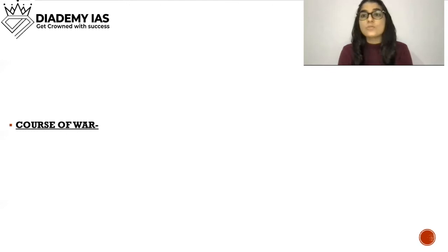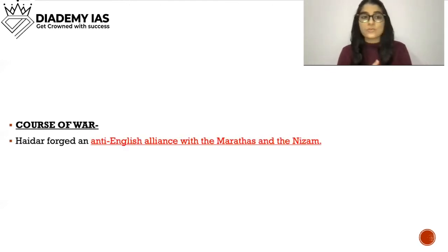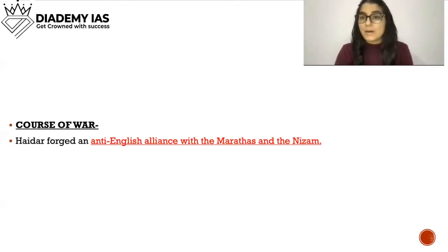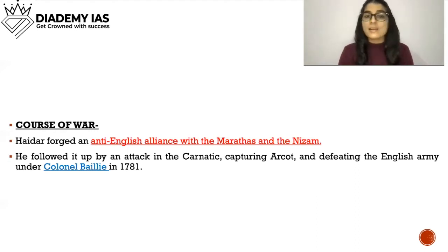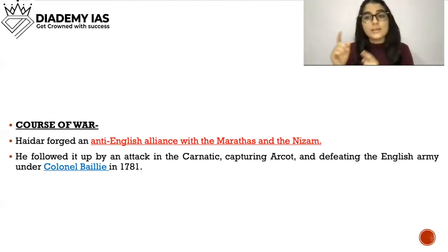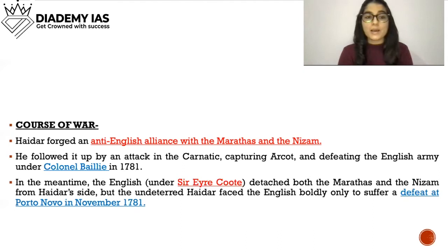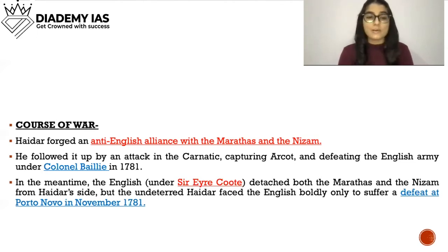Course of the Second Anglo-Mysore War: Hyder forged an anti-English alliance with the Marathas and Nizam. He followed it up by attacking the Carnatic, capturing Arcot, and defeating the English army under Colonel Bailey in 1781. Meanwhile, the English under Sir Eyre Coote detached both the Marathas and Nizam from Hyder's side, but the undeterred Hyder faced the English boldly, only to suffer a defeat at Porto Novo in November 1781.